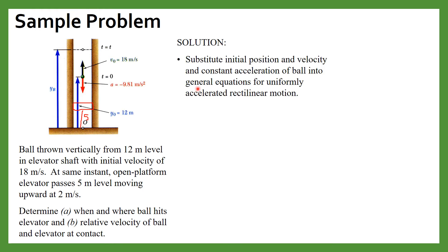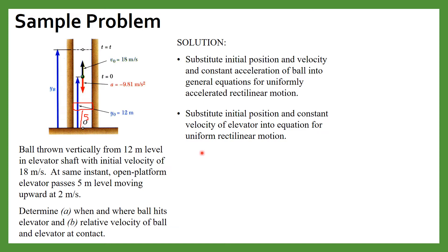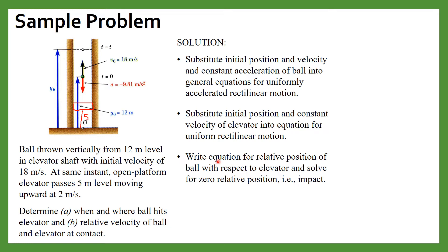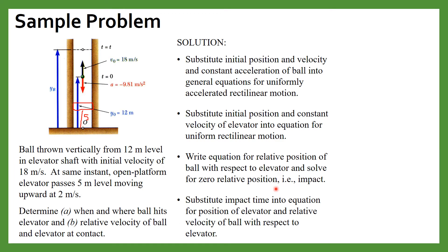To solve this problem, first substitute the initial position, velocity, and constant acceleration of the ball into the general equations of motion — we need equations for both the ball and the elevator. Then write the equation for the relative position of the ball with respect to the elevator and solve for zero relative position, since at impact their relative distance is zero. Finally, substitute the impact time into the elevator position equation and compute the relative velocity.